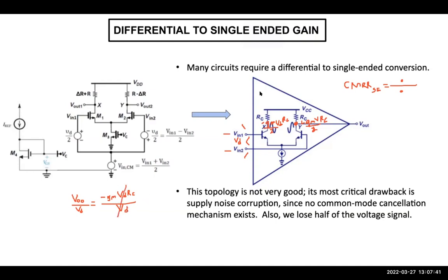Though this is differential output. When we take one single output at the output, we are losing how much of the gain? Half of it. Because now this is 2 here. So now the gain is GM times RC over 2.